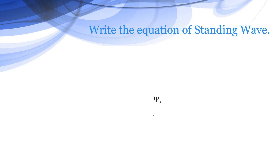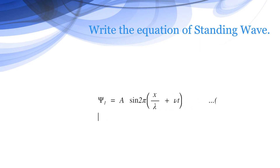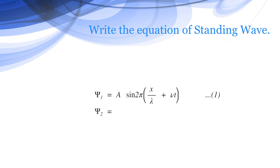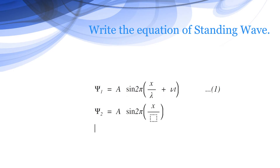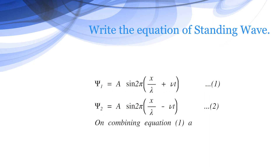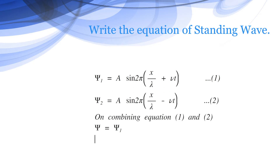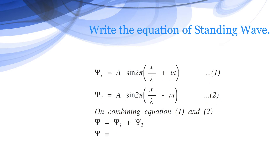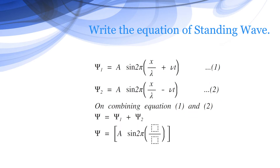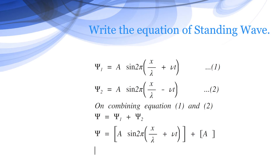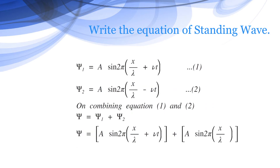Let's take these two equations: psi1 equals A sin of (2pi x / lambda + nu t) — that is equation 1 — and psi2 equals A sin of (2pi x / lambda - nu t) — that is equation 2. On combining these two equations, psi becomes psi1 plus psi2, which equals A sin(2pi x / lambda + nu t) plus A sin(2pi x / lambda - nu t).